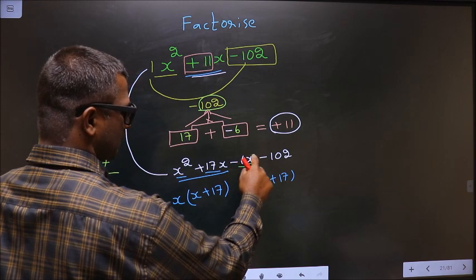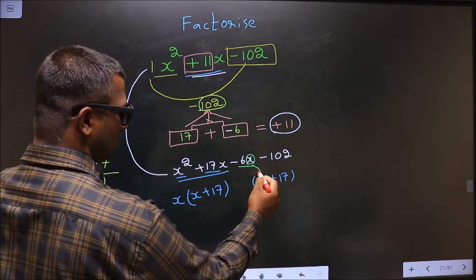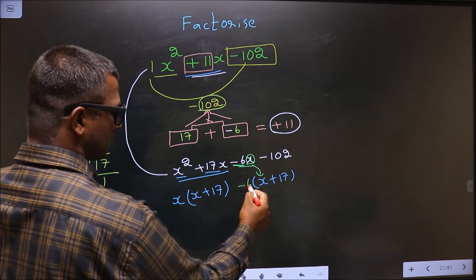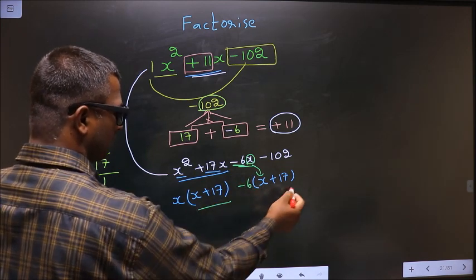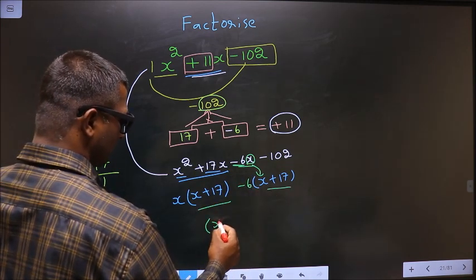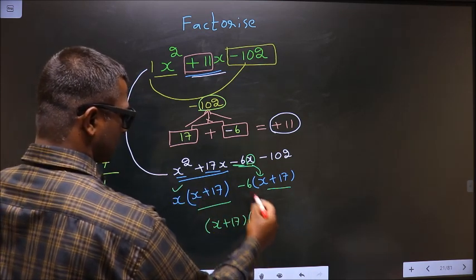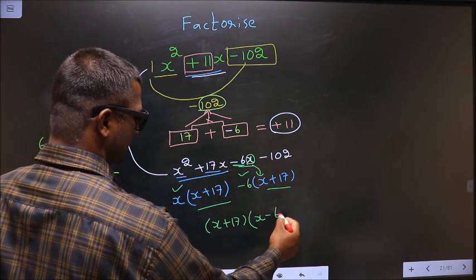So now from this, x has gone inside. So outside you are left with minus 6. Now you take out x plus 17 common. So here you have x, and here you have minus 6.